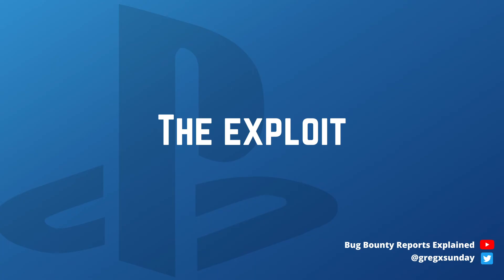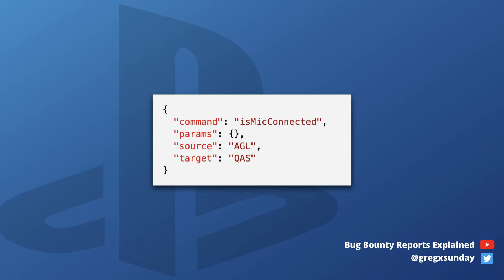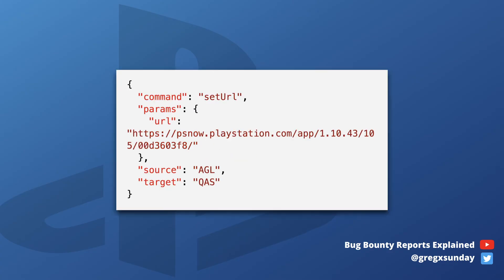Let's now put this all together and see how the full exploit looked. Normally messages sent via the WebSocket connection include a command, its parameters, the application that calls the command, and the target application. One command made the target application open a provided website and embed its content to present to the user. By default it was some site from PlayStation's server, but it was also possible to set this URL to the exploit.